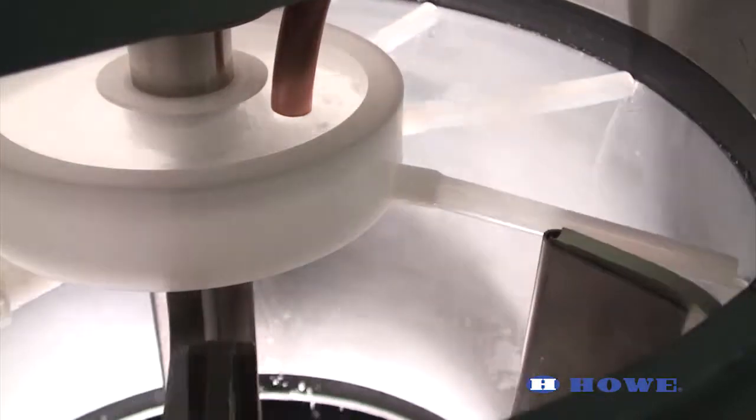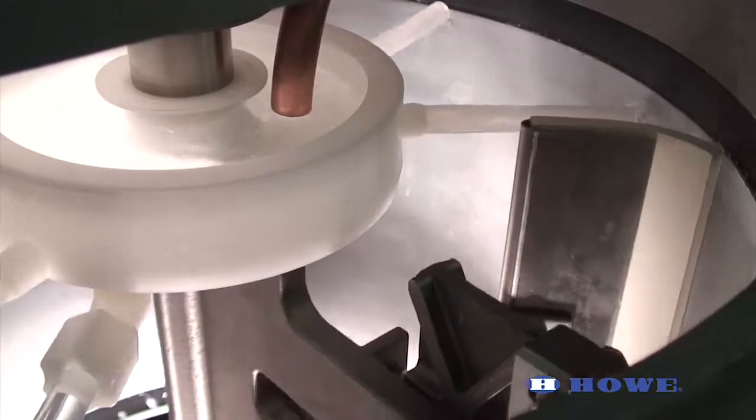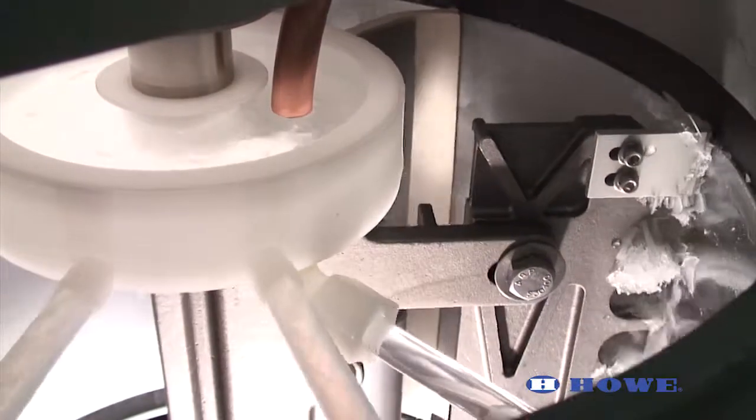After each adjustment, observe the ice freezing and harvesting pattern on the evaporator. If still underfeeding, open an additional quarter turn.